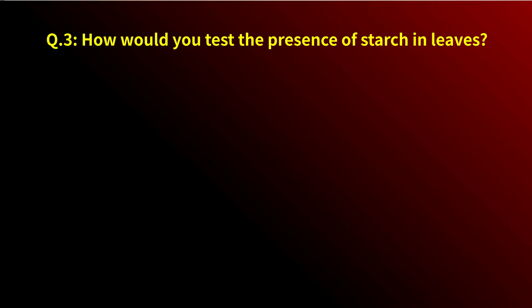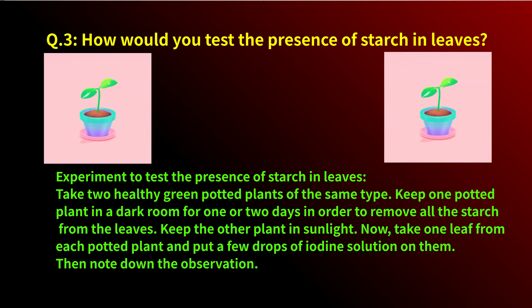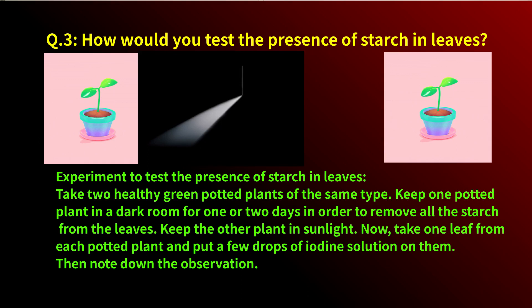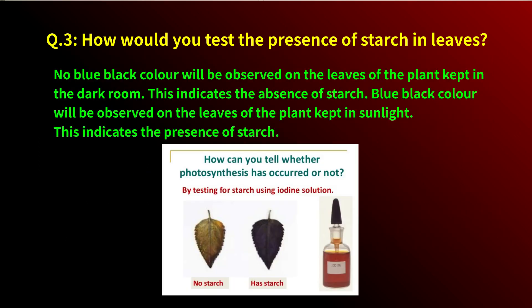How would you test the presence of starch in leaves? Take two healthy green potted plants of the same type. Keep one in a dark room for two to three days to remove all starch from the leaves, and keep the other in sunlight. Take one leaf from each plant and put a few drops of iodine solution on them. No blue-black color will be observed on the leaf from the dark room, indicating absence of starch. Blue-black color will be observed on the leaf from the sunlit plant, indicating the presence of starch.